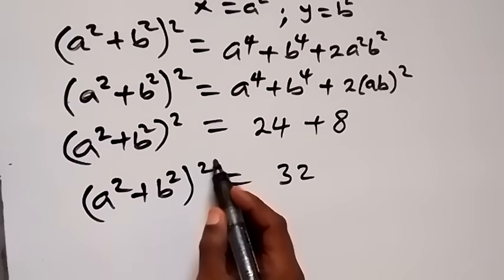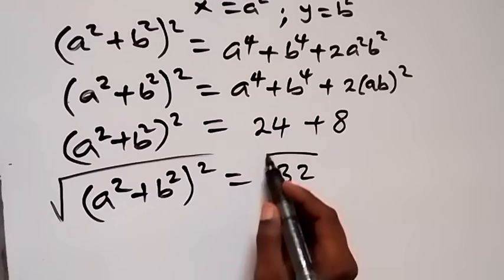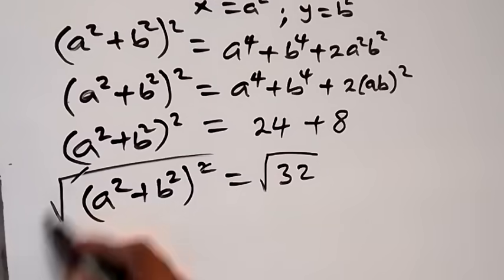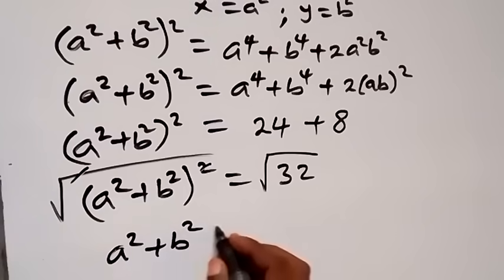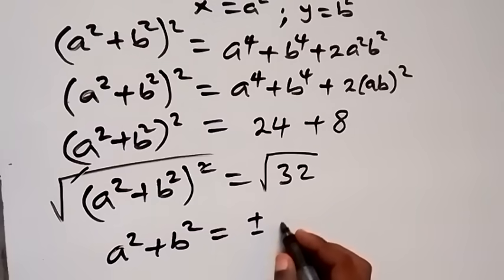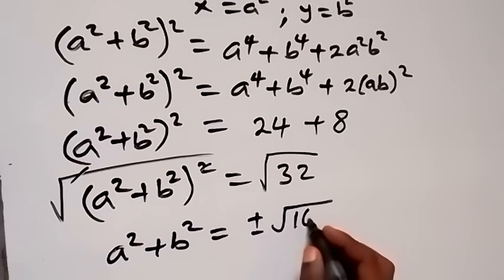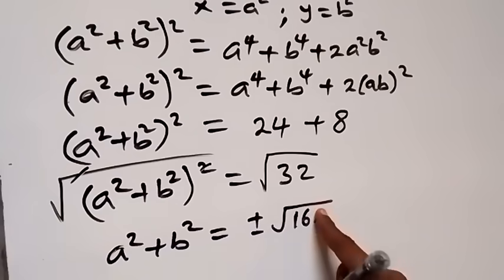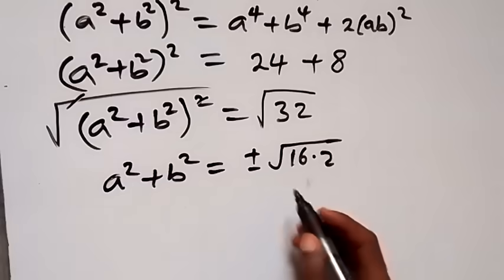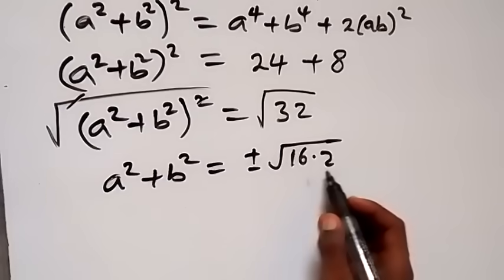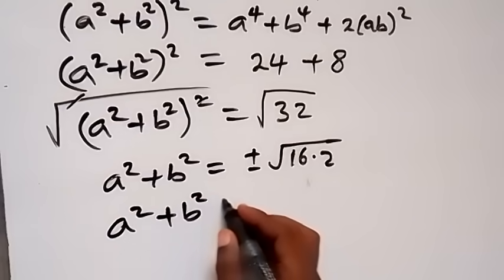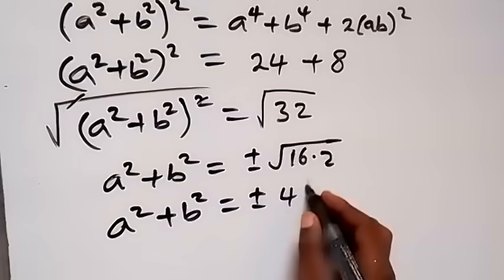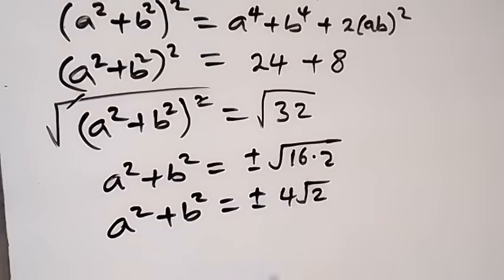Taking the square root on both sides, the square cancels on the left, giving us a² plus b² equals plus or minus the square root of 32. We can write √32 as √16 times √2, and √16 is 4, so a² plus b² equals plus or minus 4√2.